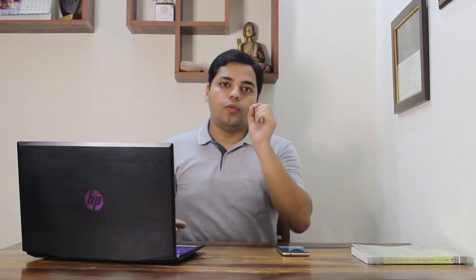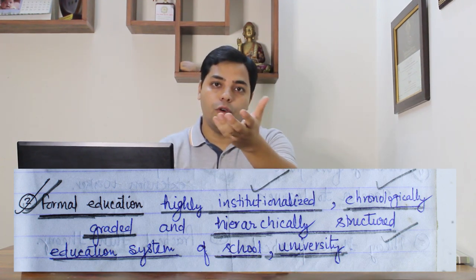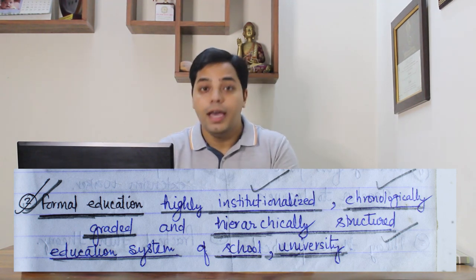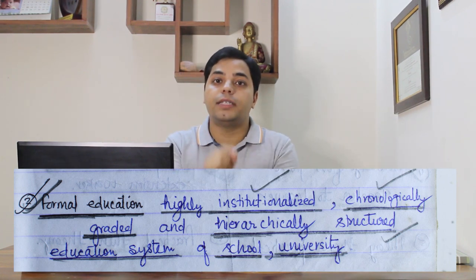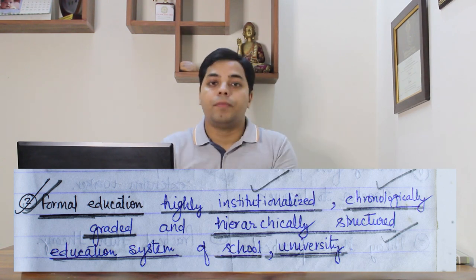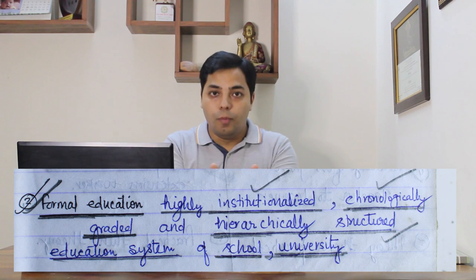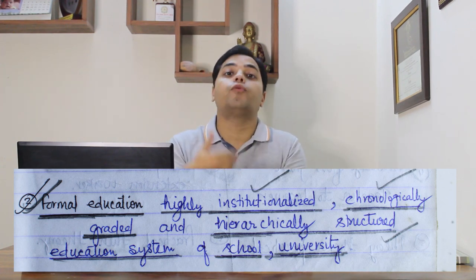Now let's look at formal education, informal education, and non-formal education. Formal education is highly institutionalized, chronologically graded, and hierarchically structured — the education system of school or university where the syllabus is fixed, timetable is defined, courses are approved by university administration. You cannot move outside that structure. Classic examples are schooling and university education.